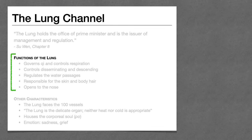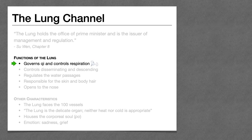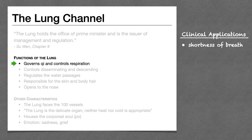The first function is that the lung governs Qi and controls respiration. The lung is a source of postnatal Qi — it's where we get the da qi, or the Qi of the air — and through our breathing, the lung manages and regulates the flow of that Qi throughout the body. Clinically, if a person has Qi deficiency, we might turn to points on the lung channel to help tonify. With lung Qi deficiency, we might see things like shortness of breath, a weak voice, spontaneous sweating, or a tendency to get sick easily.